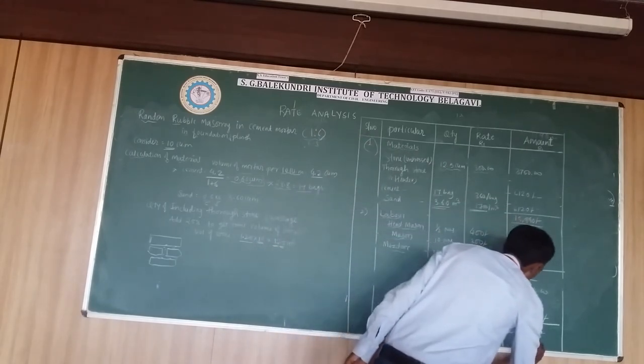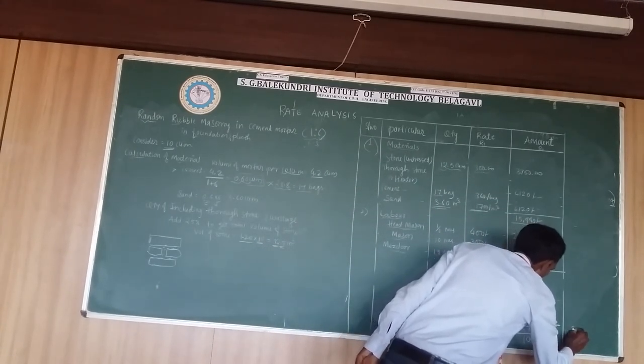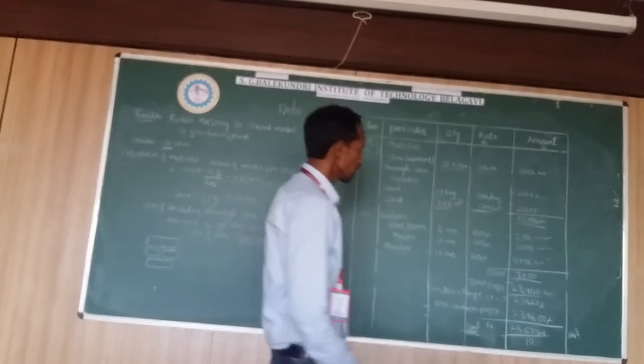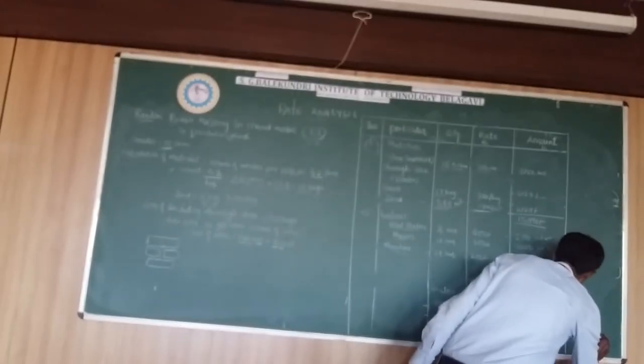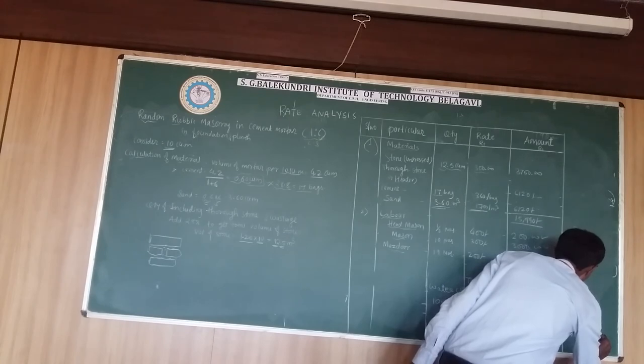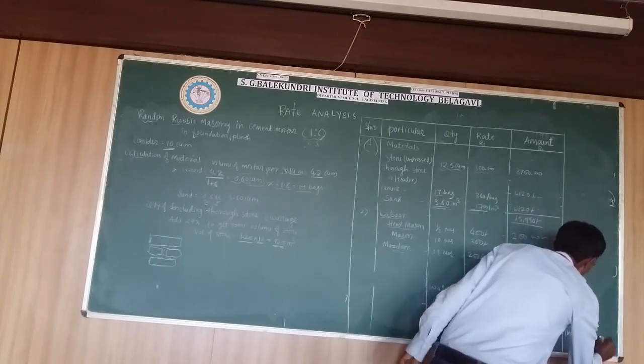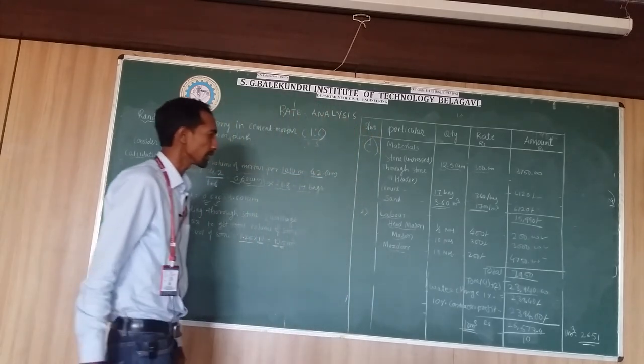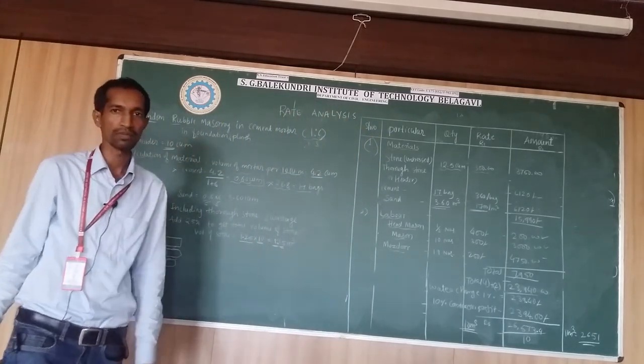You can divide by 10 here. You will get for 1 meter cube of random rubble masonry. This is 2650 rupees. This is for 1 meter cube of random rubble masonry. The cost is 2651 rupees.